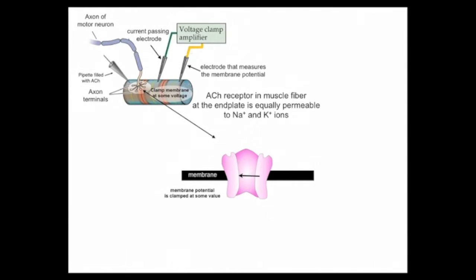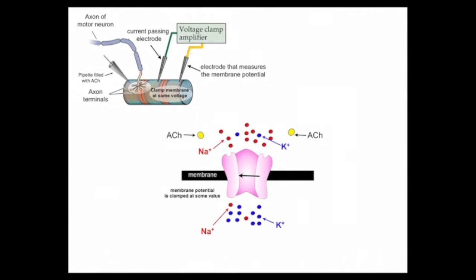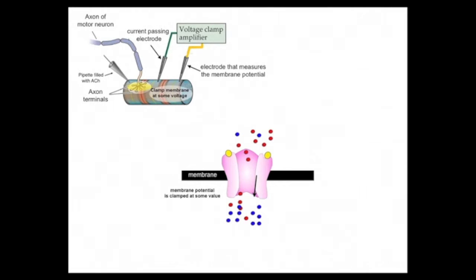Here we clamp the muscle fiber at some value, and next we will follow the flow of ions when acetylcholine is puffed onto the receptors. Sodium ions are shown in red and potassium ions are shown in blue. The acetylcholine molecules are shown as yellow. We puff some acetylcholine on the synapse and open the acetylcholine receptors. The binding of the acetylcholine molecules onto the receptor opens the gate and allows both sodium and potassium to flow through the channel.